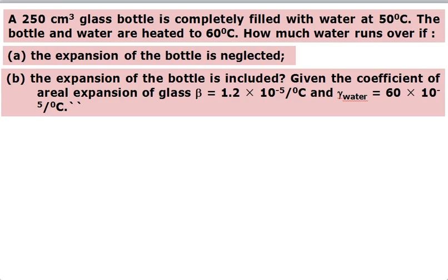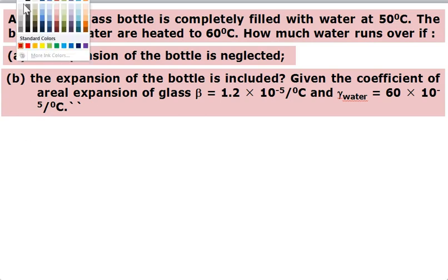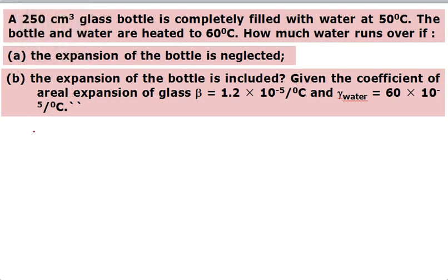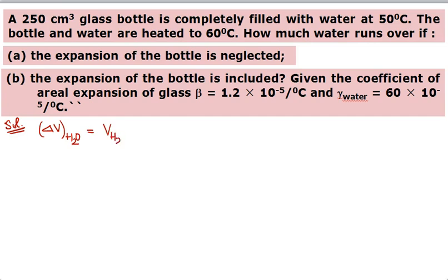Next: a 250 cm³ glass bottle is completely filled with water at 50°C. The bottle and water are heated to 60°C. How much water runs over if the expansion of the bottle is neglected? Since bottle expansion is neglected, only water expands. So the overflowed volume equals the change in volume of water: delta V = initial volume of water × gamma_water × rise in temperature.